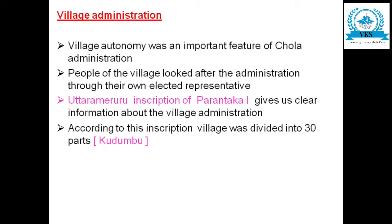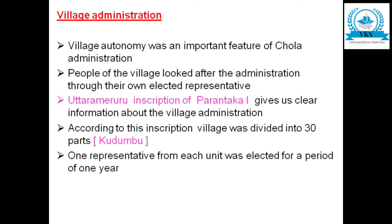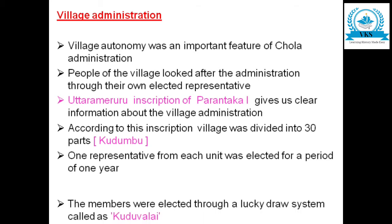According to the Uttarameruru inscription, the village was divided into 30 parts called as Kudumbu. One representative from each unit was elected for a period of one year. The members were elected through a lucky draw system called as Kuduwalai.